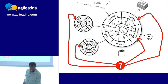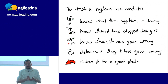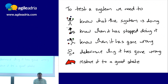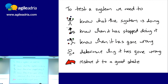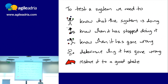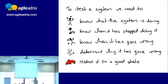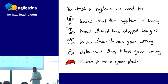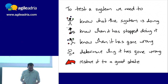System-level testing: the common way is to come in completely from the outside and treat the whole thing as a black box. What do we need to test the system? We need to know what the system is doing when it's stopped — which is often quite tricky in a distributed system. We need to know when it's gone wrong and preferably why. There's nothing worse than a big system test that gives you a red mark and you don't know what happened. Finally, you need to restore it to a good state so you can move to the next test.